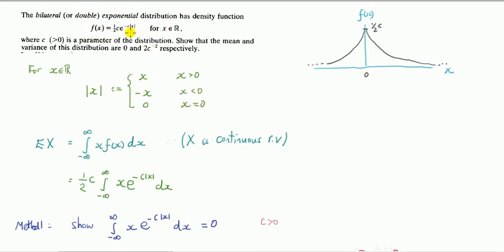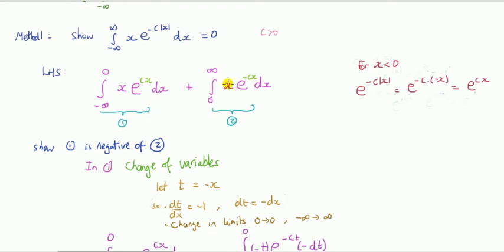You can see here that X is a continuous random variable, so if we want to compute the expected value of X, we use this formula and substitute for f(X). I get this. Method one is working from the definition. I want to show that the mean is zero. I'm looking at this expression here. You can see that since C is positive, all I have to do is show that this integral here is zero.